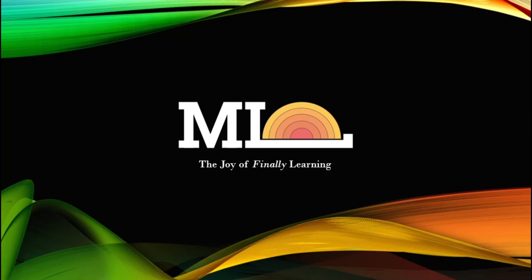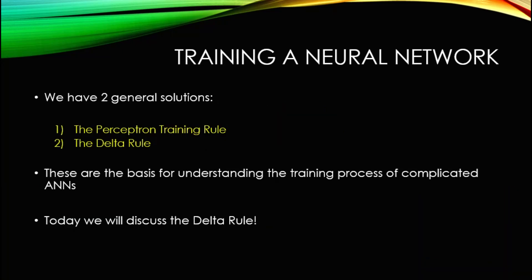Just to recap, when it comes to training a neural network we have two main solutions. One is the perceptron training rule discussed earlier, and the other one — which is my favorite and is actually quite amazing — is called the delta rule. The delta rule is tightly related to the amazing algorithm called backpropagation.